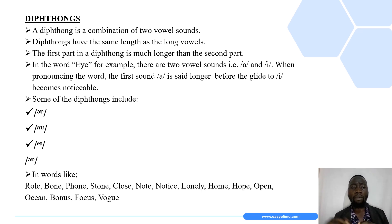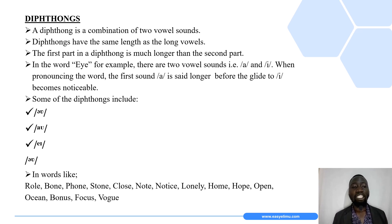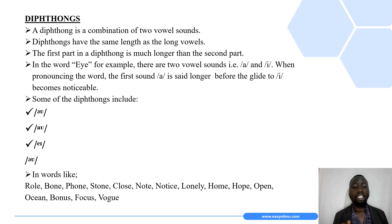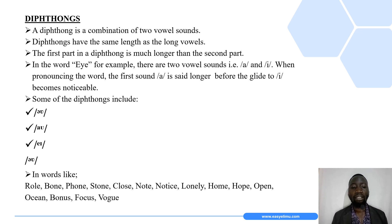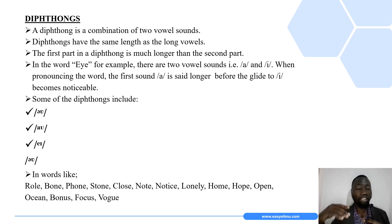Some of the diphthongs we have include the sound /oʊ/, the sound /aʊ/, and the sound /eɪ/. The sound /oʊ/, for example, is common in words like roll, bone, phone, stone, close, note, notice, lonely, home, hope, open, ocean, bonus, focus, and vogue.